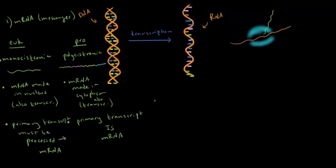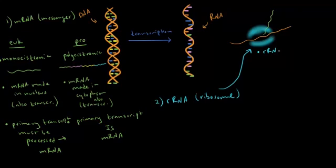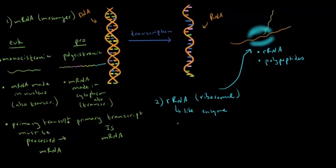The next type of RNA is rRNA, which stands for ribosomal RNA. Ribosomal RNA is found in the ribosome, which is made up of rRNA and polypeptides. Interestingly, rRNA acts like an enzyme even though it's a nucleic acid — it is known as a ribozyme. It is the enzymatic activity of rRNA in the ribosome that actually puts together the polypeptide chain.